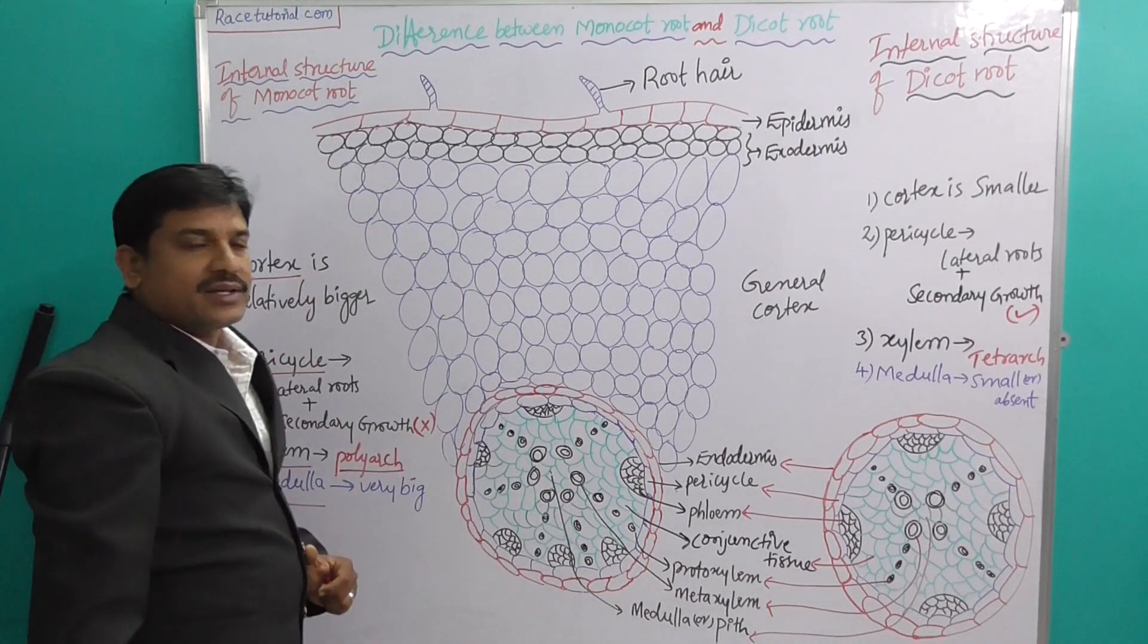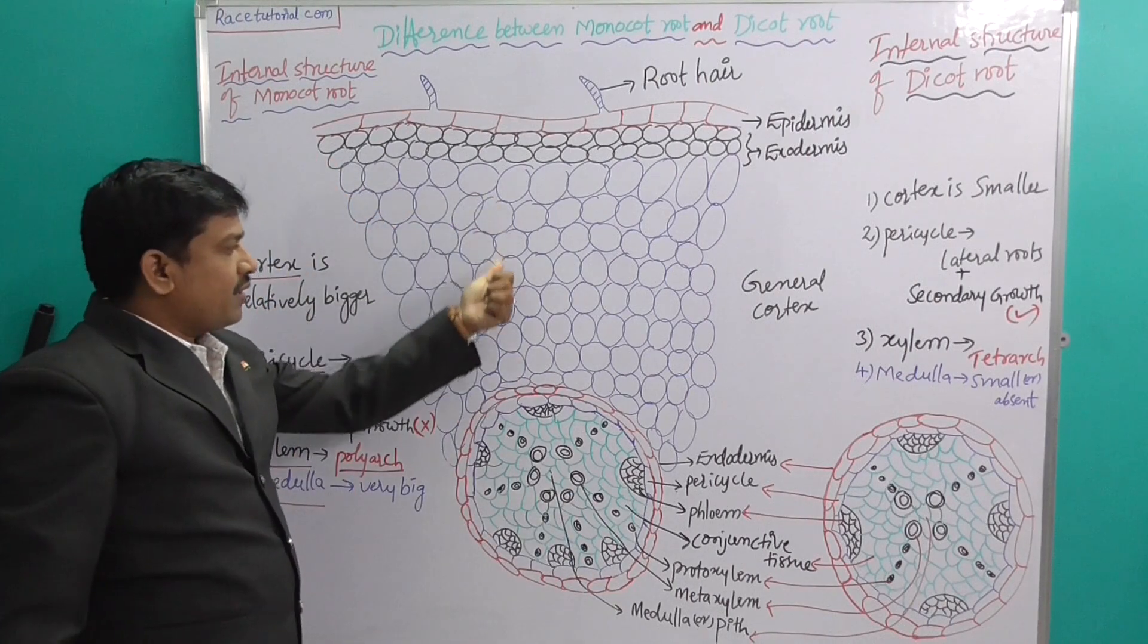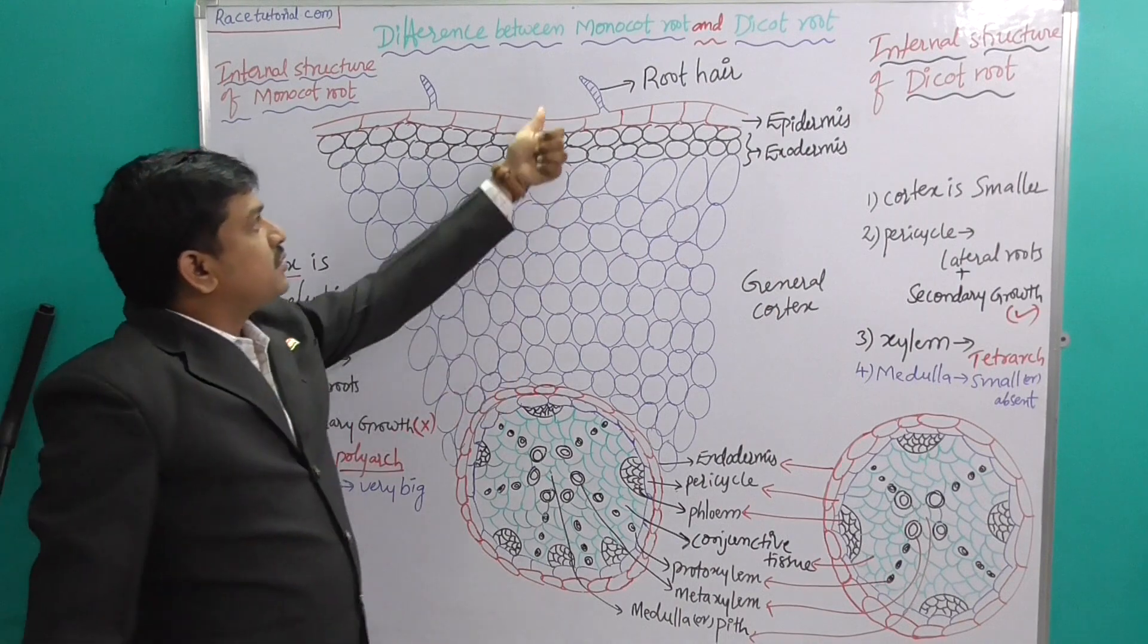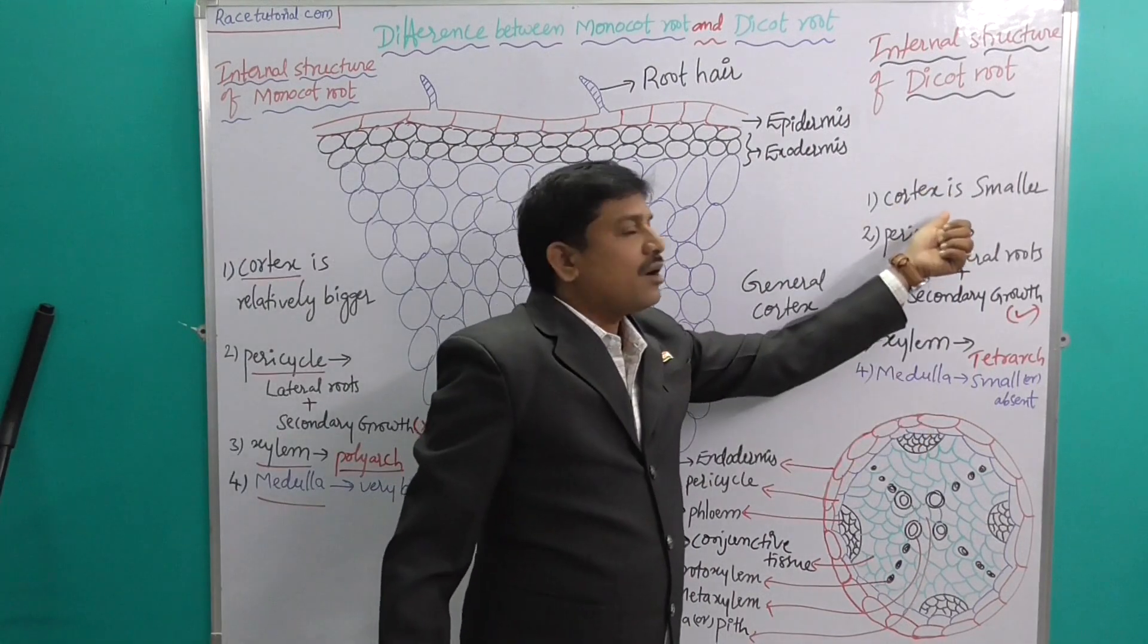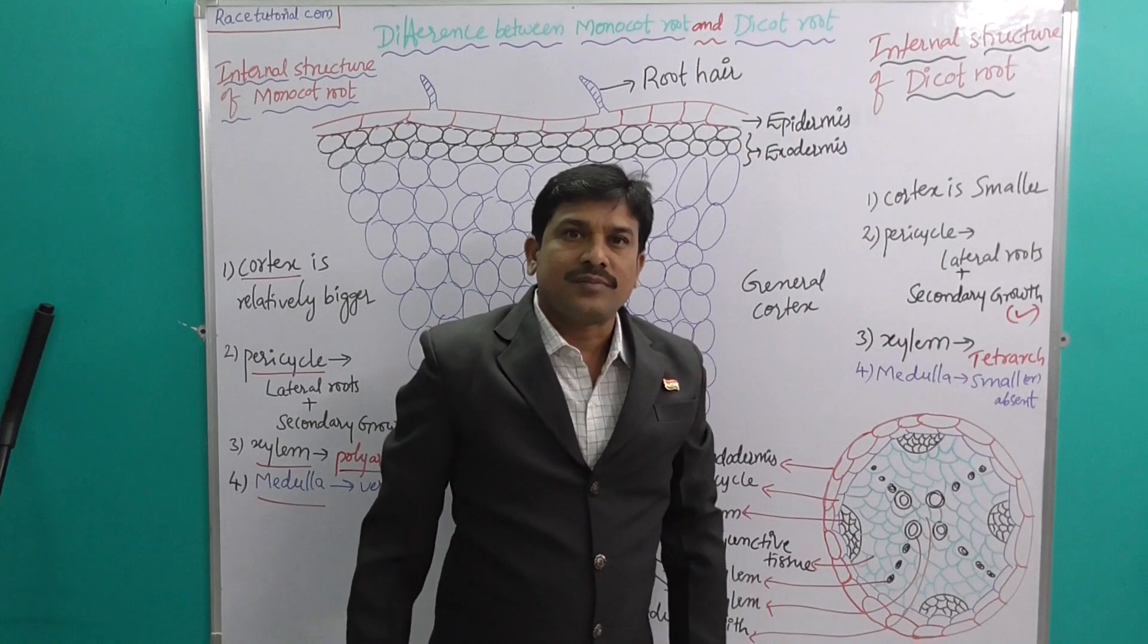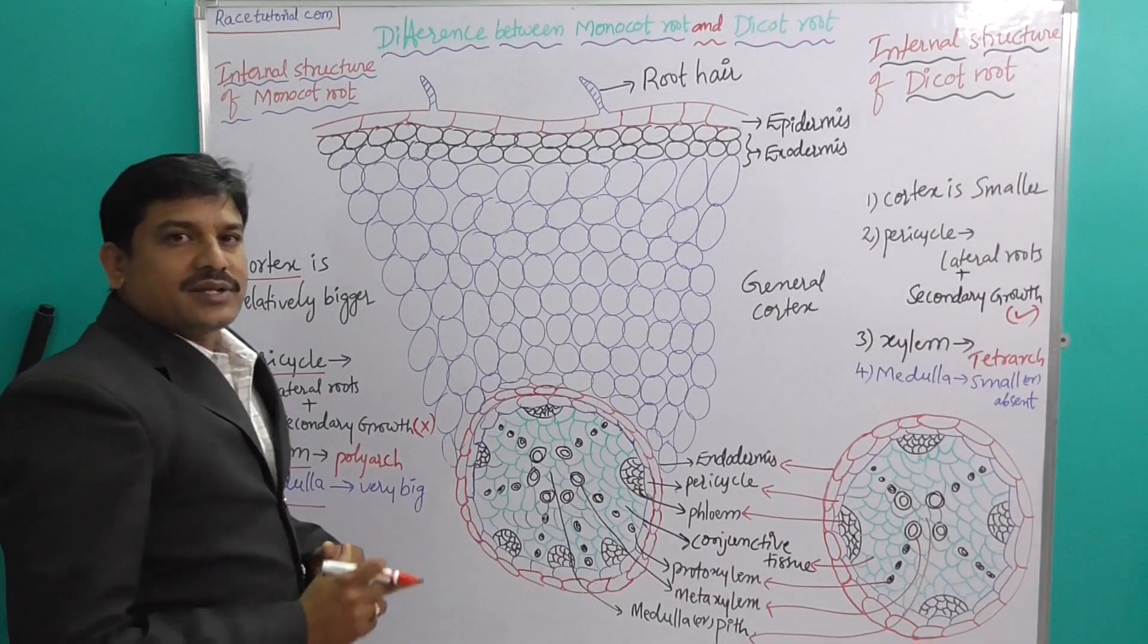Next is cortex. In monocot, the cortex is very big. What about dicot? In dicot, the cortex is very small. Next, the stele, which is divided into three parts.